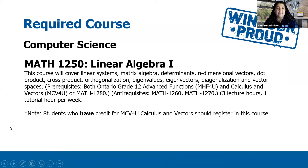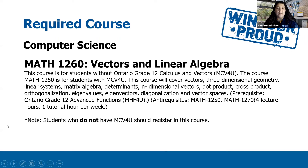Next, you'll need to add a math class to your schedule, and which one you add depends on your math background from high school. If you took calculus in grade 12, you will register in Math 1250, Linear Algebra 1. If you did not take grade 12 calculus, you'll instead register for Math 1260, Vectors and Linear Algebra. Either way, you'll be adding a linear algebra course as the next course in your first semester.